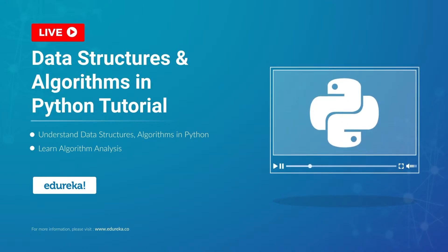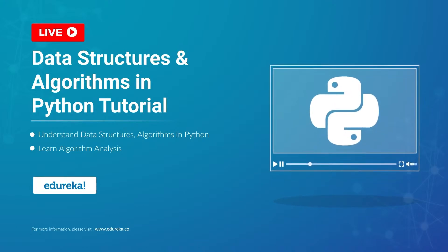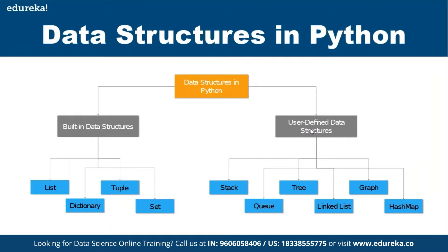Starting with data structures in Python — a data structure is nothing but a logical ordination of data. In Python there are two types: built-in data structures and user-defined data structures. Built-in data structures, also called standard data structures, come along with the language. These include list, tuple, dictionary, and sets, and each has a different purpose in Python.